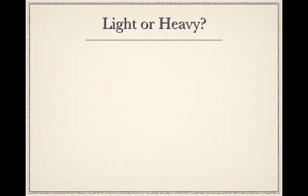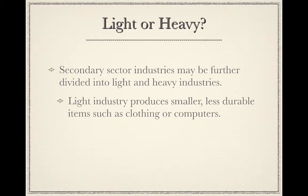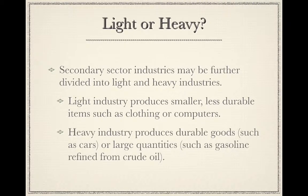Secondary sector industries may be further divided into light and heavy industries. Light industry produces smaller, less durable items such as clothing or computers. Heavy industry produces durable goods such as cars, or large quantities of goods such as gasoline refined from crude oil.